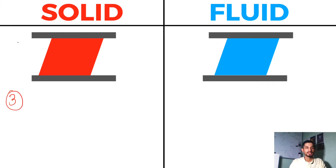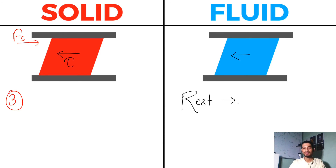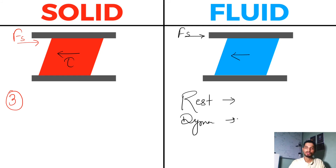Now the third point: if I am applying some shear force to a solid, it will have some resistance against the shear force, which is known as shear stress — tau. So in solid we have this resistance to shear force. But in fluid, if my fluid is in a rest condition, I am not going to have any resistance. In a static condition the fluid will not have any resistance against shear force, but in a dynamic condition I'll have viscosity — a viscous force — which will resist the shear force.